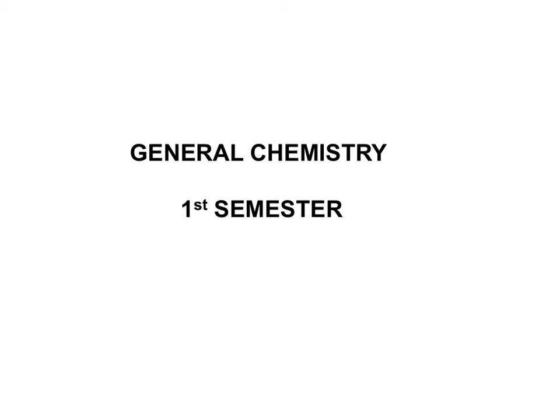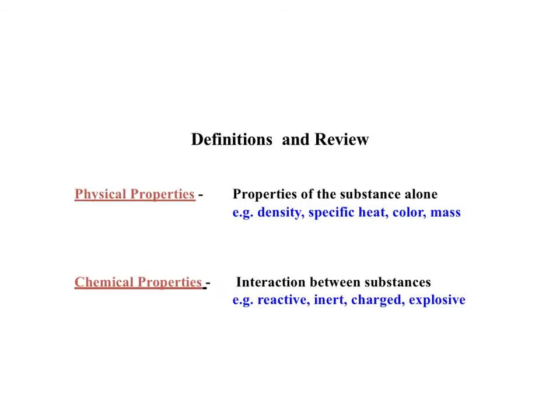I have 40 slides here and I'll decide whether to break it into one or two parts as we go along. Let's start with some definitions in review. Physical properties versus chemical properties is a good start. Physical properties are associated with the substance alone — you can list several types. Density is one example, and it doesn't matter how much material you have; the density of the compound or element will be the same.